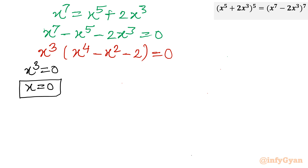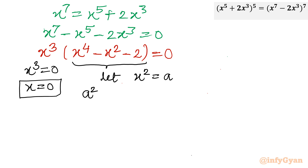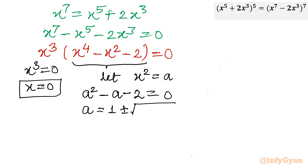Now come to the bracket factor, the quadratic-like equation x⁴ - x² - 2 = 0. Since x⁴ and x² are involved, let me substitute x² = a, giving the quadratic: a² - a - 2 = 0. I will use the quadratic formula to find a: a = (1 ± √(1 + 8)) / 2 = (1 ± 3) / 2.